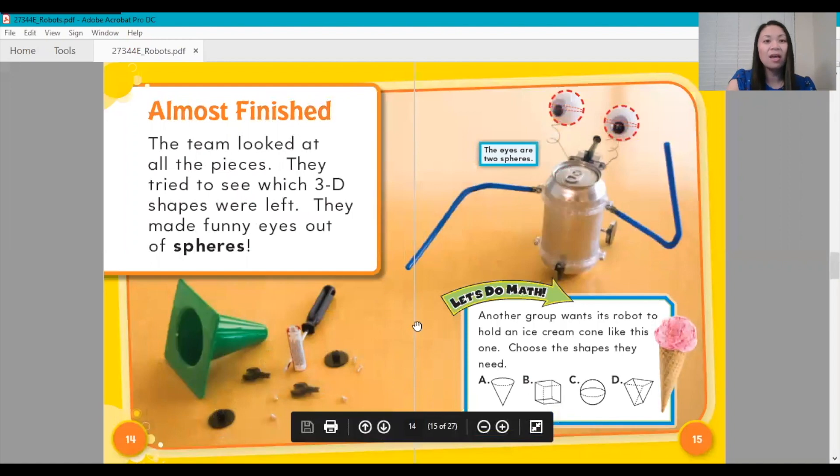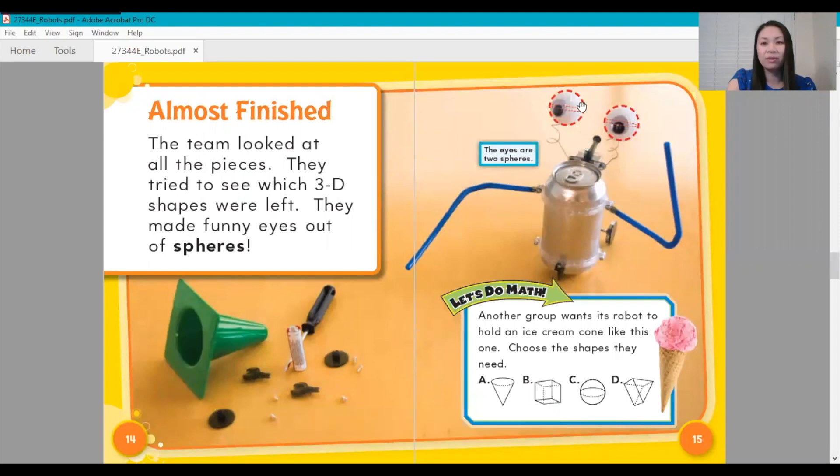Almost Finished. The team looked at all the pieces. They tried to see which 3D shapes were left. They made funny eyes out of the spheres. The eyes are two spheres.